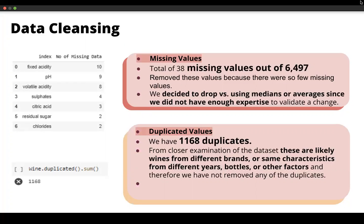Okay, thank you, Jamie. So after the data exploration, we decided to go with the cleansing part before we do any further model for the data set. The first thing that we found was that the data had around 38 missing values. We decided to delete these missing values, mostly because it is just a few compared to the total observations of 6497. Also, we decided to drop instead of using the medians or the averages method since we did not have enough expertise to validate a change. We also found that we have around 1168 duplicates in this data set, but we decided we're going to remain the data set the same thing, not dropping the duplicated values.